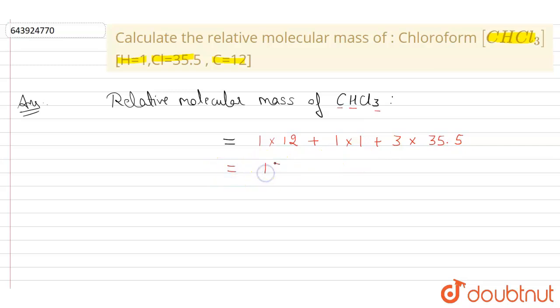Now, adding all of them: it equals 13 plus 106.5, which equals 119.5 u. This is the final answer. Thank you.